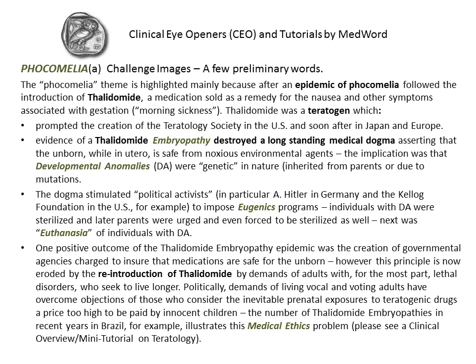Once it was determined that thalidomide was a cause of the epidemic, two consequences were of extreme importance. First, the demonstration of a relationship of a medication to specific patterns of developmental anomalies destroyed a long-standing dogma. This dogma held that such anomalies had to be of genetic nature — that is, they were either new mutations or inherited from the parents.